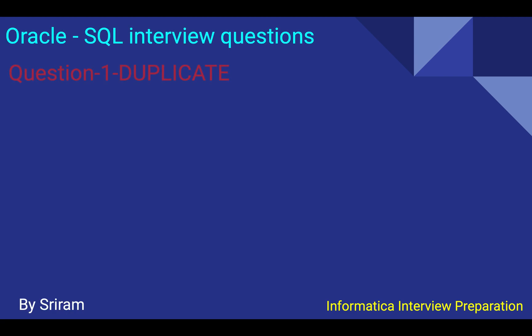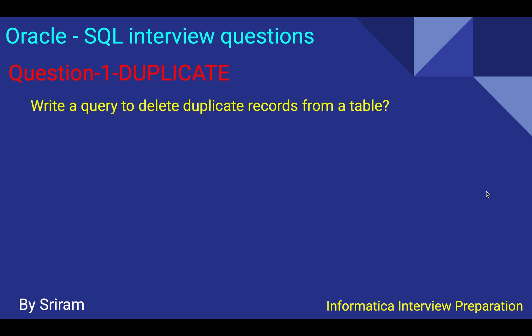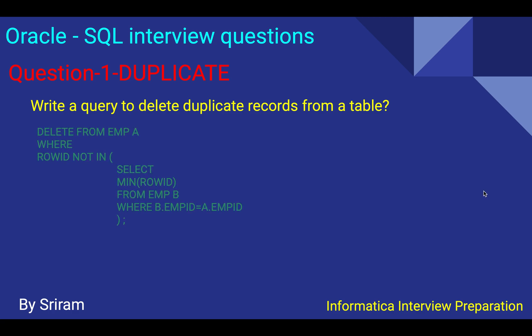Usually the first question starts with duplicate finding. They may ask you to write a query to display or delete duplicate records from a table. You can try: DELETE FROM emp a WHERE ROWID NOT IN (SELECT MIN(ROWID) FROM emp b WHERE b.emp_id = a.emp_id). This is a correlated query using the pseudo column ROWID.